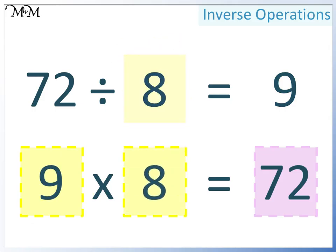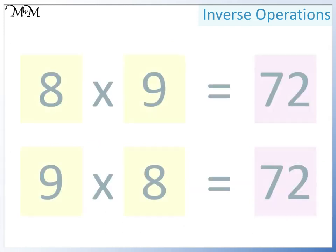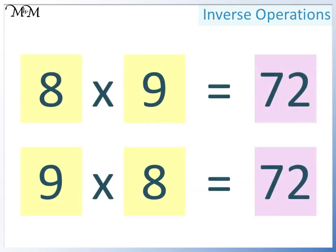9 times 8 equals 72. The two multiplications that we have are 8 times 9 equals 72 and 9 times 8 equals 72. In both calculations, two smaller numbers multiply together to make a larger number.